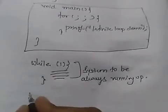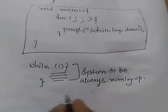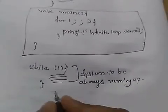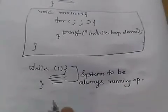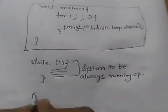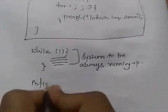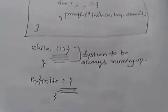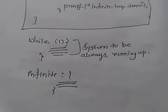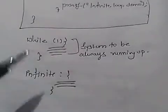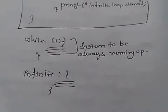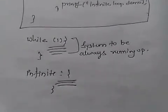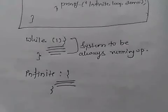We can also create an infinite loop with the help of the goto statement. In the goto statement, you just give a label — for example, 'infinite' — and without any exit condition it becomes an infinite loop. Infinite loops are very useful for creating systems that are continuously running. Thank you.